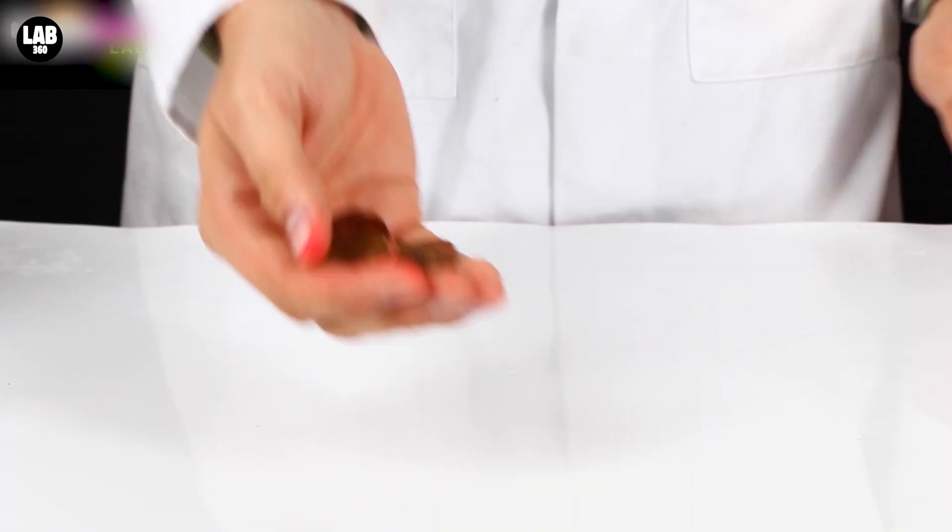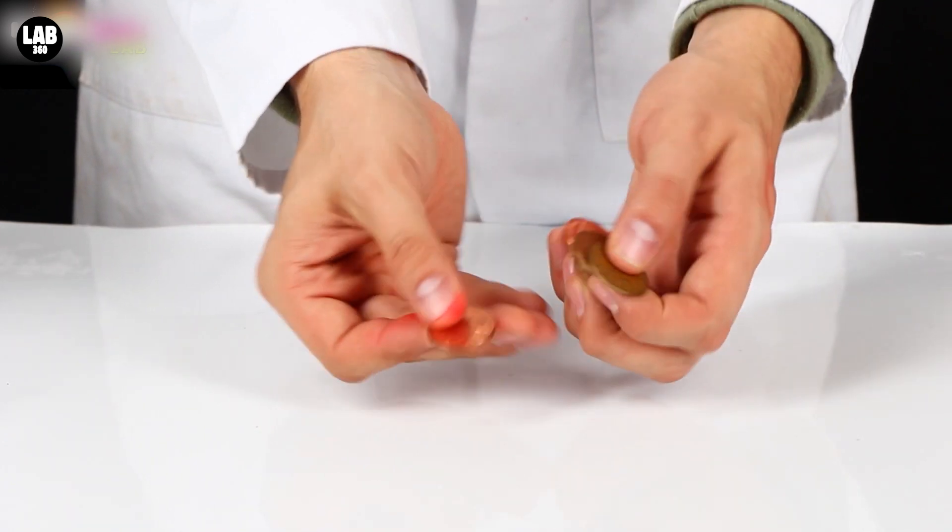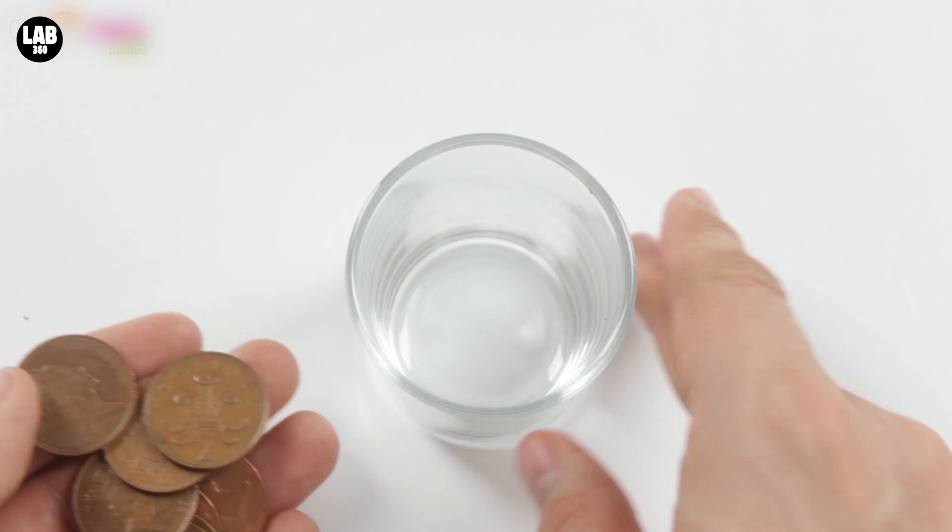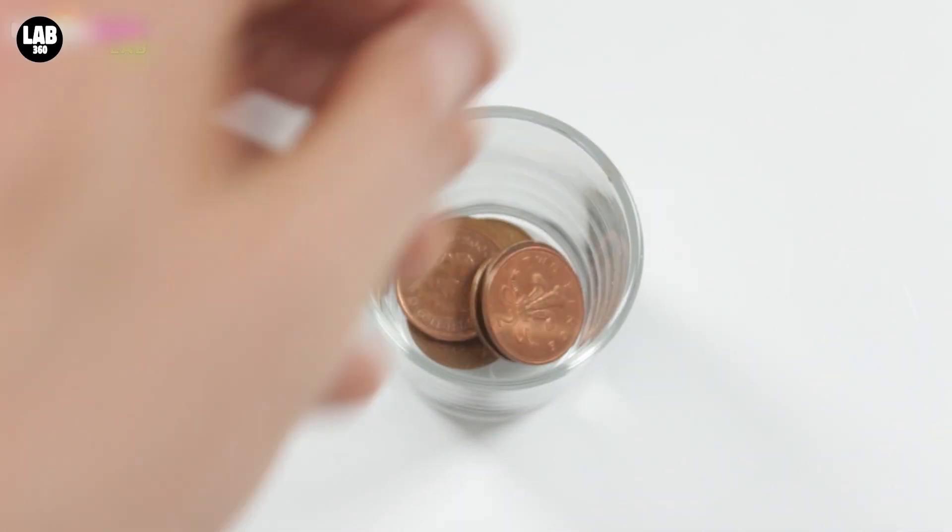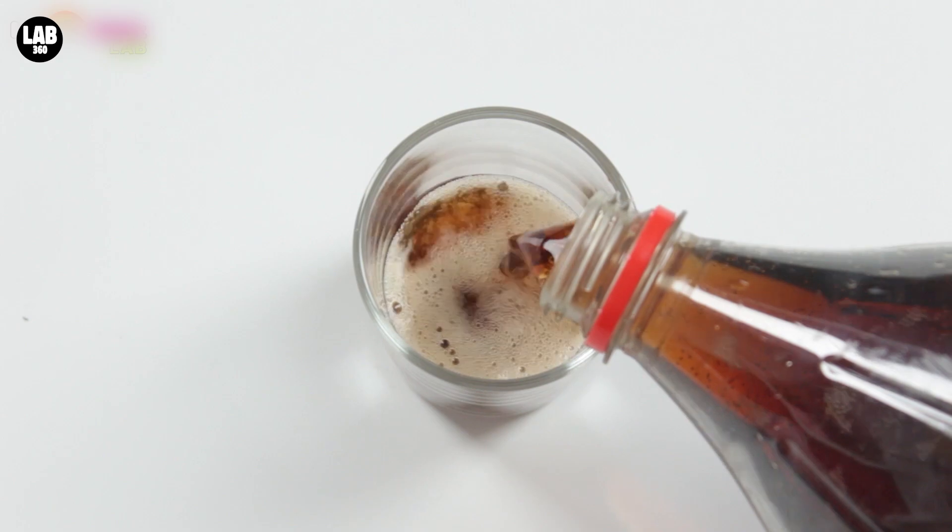Number five. Cleaning coins. We've all got a few coins in our pockets that seem to be quite old and dirty. But simply put them inside a glass with some Coke and let them sit for a couple of hours.